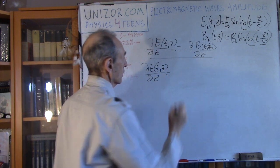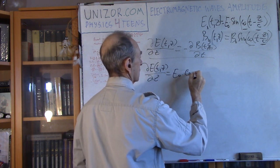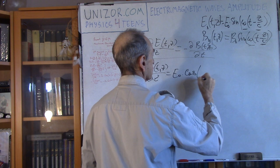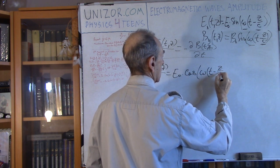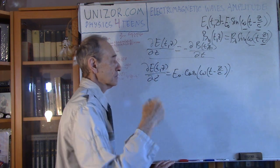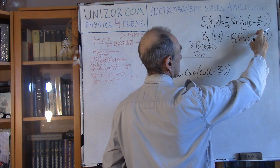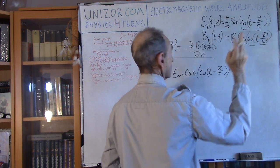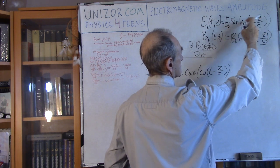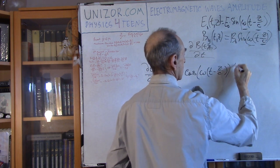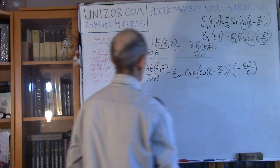dE of tz by dz is equal to, E0 is a constant, derivative of sine is cosine of this function times derivative of the inner function. The derivative by z of the inner function under sine gives minus omega over c. So I multiply by minus omega over c.